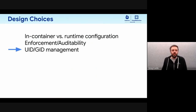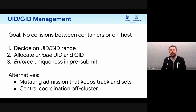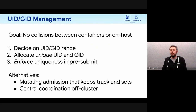For UID and GID management, the goal is no collisions — a container with certain privileges should never share a user ID with containers that don't need those privileges, so a compromised container doesn't get a union of all permissions. We decided on a range and used the pre-submit to ensure uniqueness. You could also write a mutating admission controller that allocates user IDs, or coordinate off-cluster with a database. But a new Kubernetes feature at the end of the talk basically eliminates this concern.